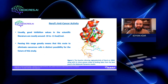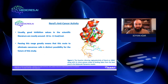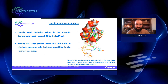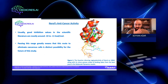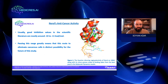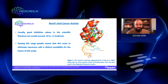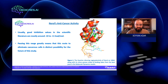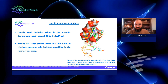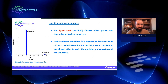Usually good inhibition values in the scientific literature are mostly around minus 10 to minus 11, especially for compounds approved by the FDA. This is like a rule in the drug world. Passing this range greatly means that this route to eliminate cancerous cells is a distinct possibility for the future of the study, and it will shed light onto future applications.